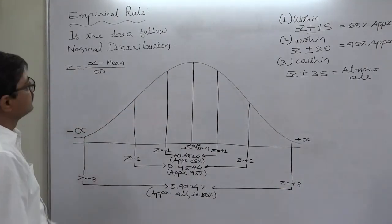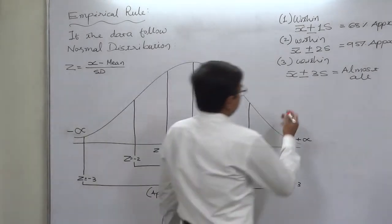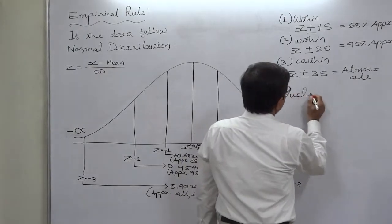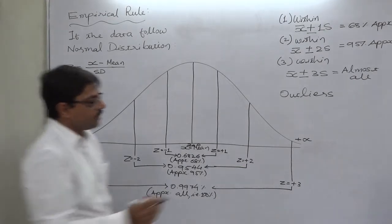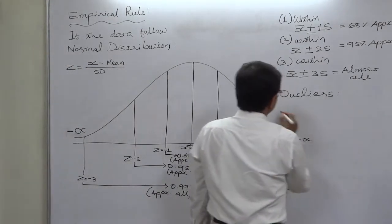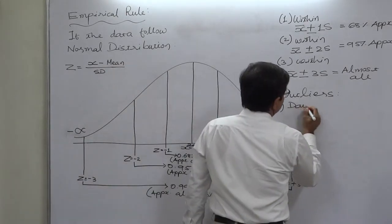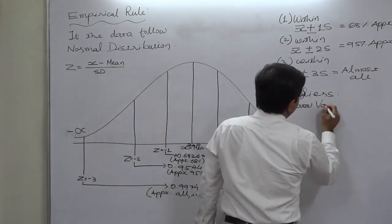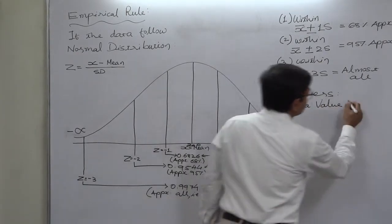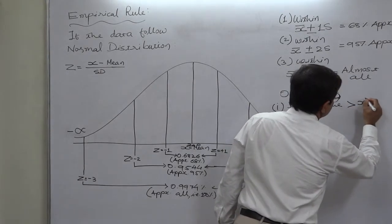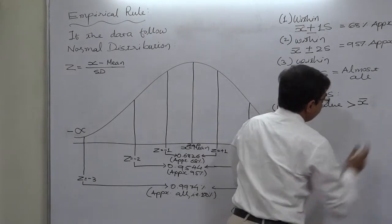This theory is known as the empirical rule. Together with this theory, there is a concept of outliers. An outlier is defined as a data value which is less than mean minus 3 standard deviations.